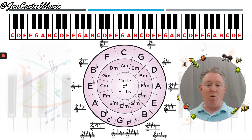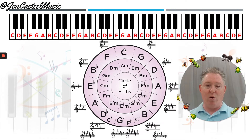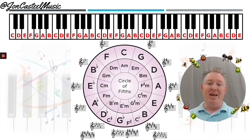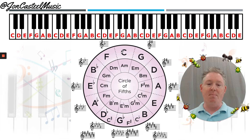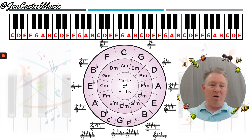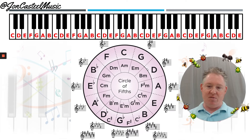That works out on the circle of fifths: C is 1, F is 4, G is 5. The relative minor is 6, right below the major chord for the key — and that works on every element of the circle of fifths.